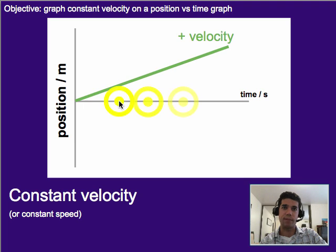In other words, as time goes on, your position is increasing in this case, and that's why we call it a positive velocity or a positive slope. It can also be a positive speed as well, or constant speed, I should say, not positive.